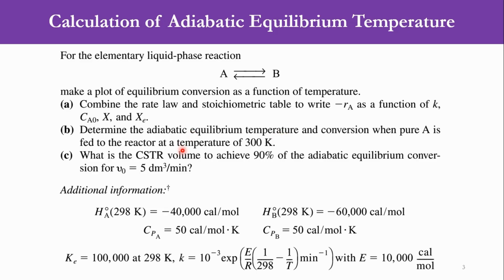The third part is: what would be the CSTR volume required to achieve 90% of the adiabatic equilibrium conversion? We will calculate the equilibrium conversion, take 90% of it, and calculate the CSTR volume. The volumetric flow rate is given as 5 cubic decimetre per minute. The heat of reaction for species A at 298 Kelvin is -40,000 cal/mol, for B it is -60,000 cal/mol. CP of A and B are both 50 cal/mol/K. The equilibrium constant at 298 Kelvin is 1,00,000, and the activation energy is 10,000 cal/mol.